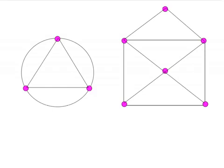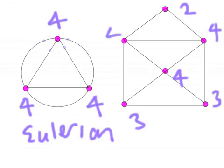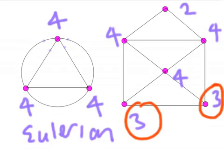Now we can look at two new graphs and decide whether they're Eulerian, semi-Eulerian, or neither. Going around the first graph, counting arcs at each node: order 4, order 4, order 4 — all nodes are even order, so this is an Eulerian graph. On the right-hand graph: order 2, order 4, order 3, order 3, order 4, order 4. There are just two nodes of odd order, so this is a semi-Eulerian graph.